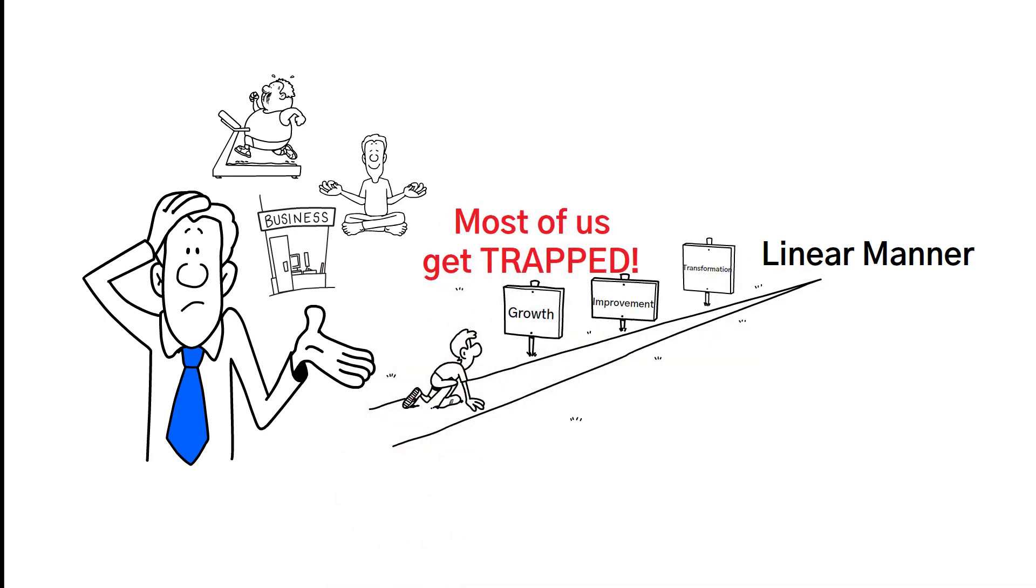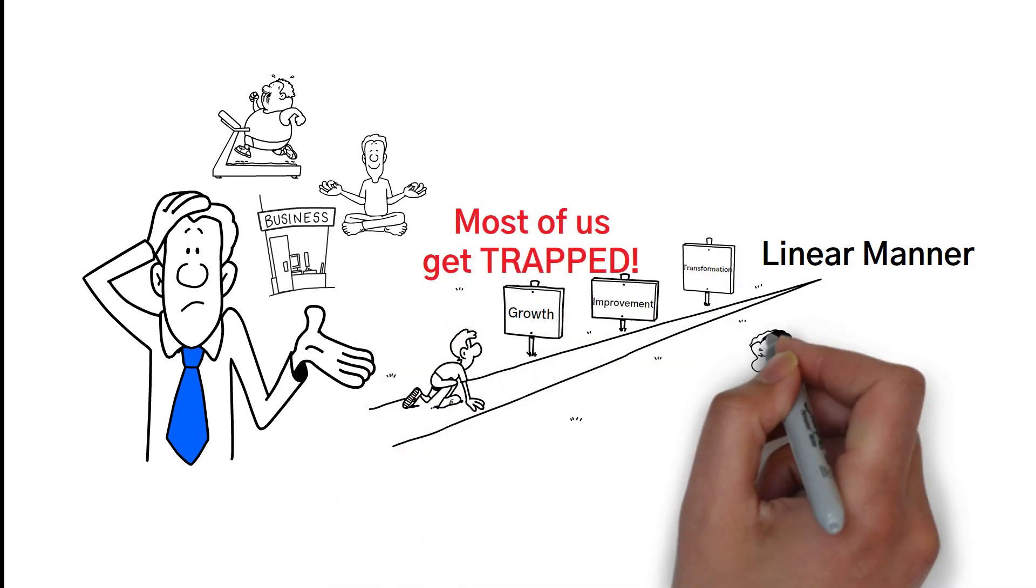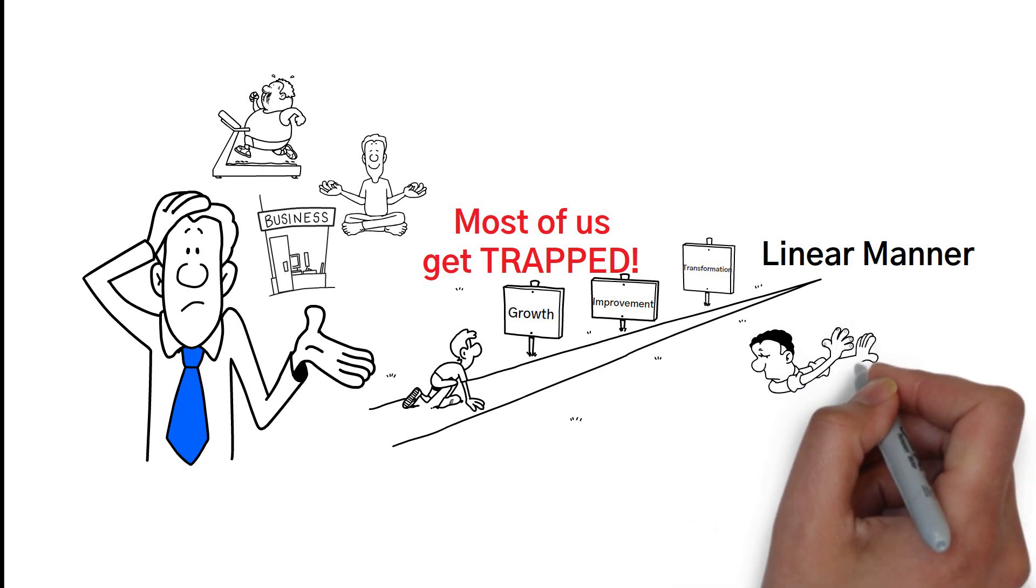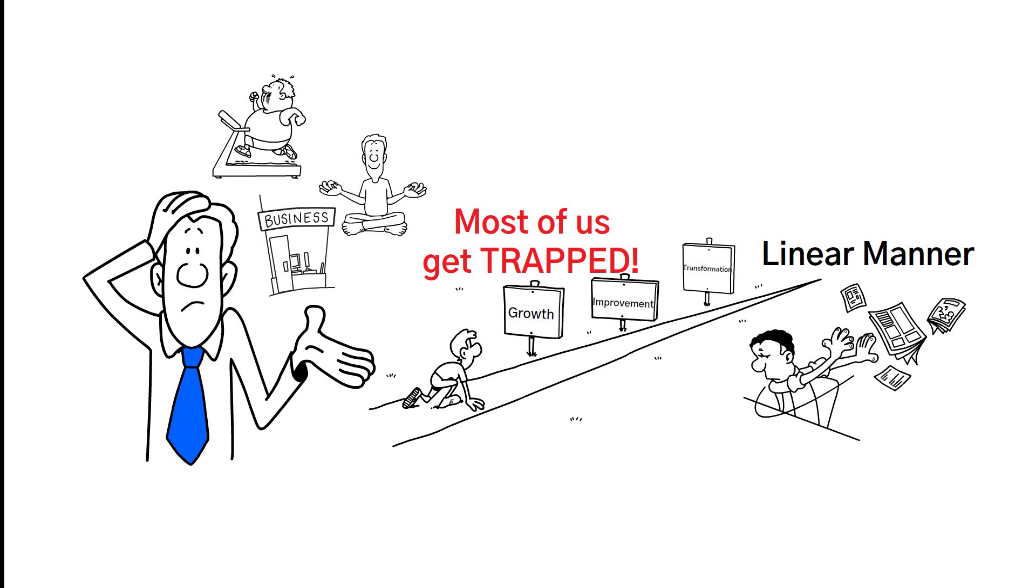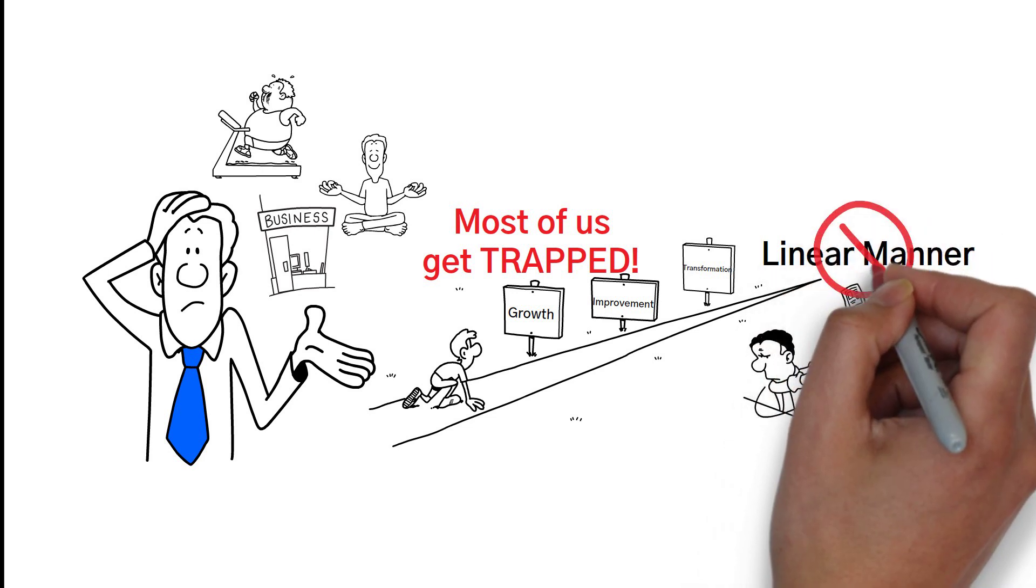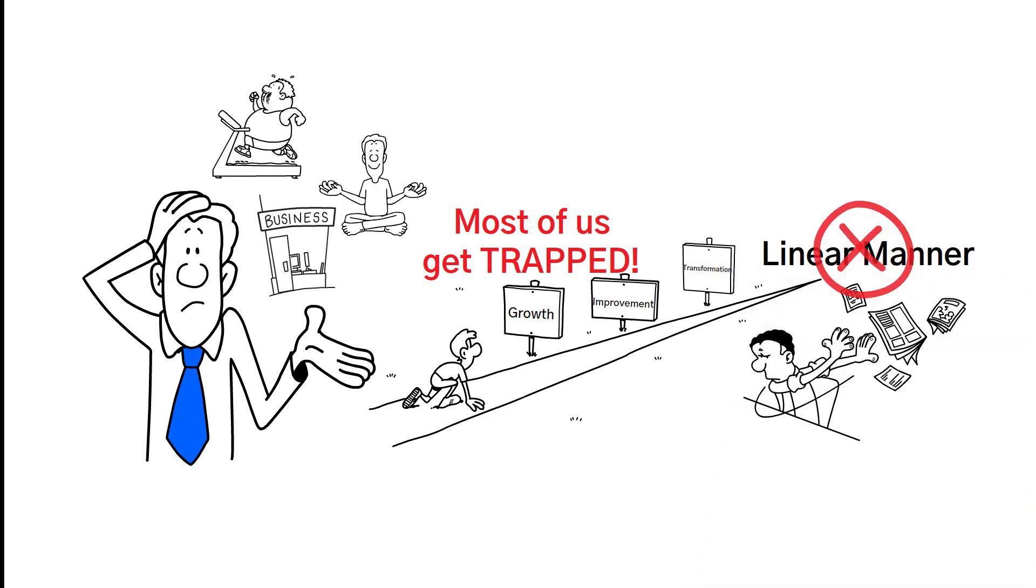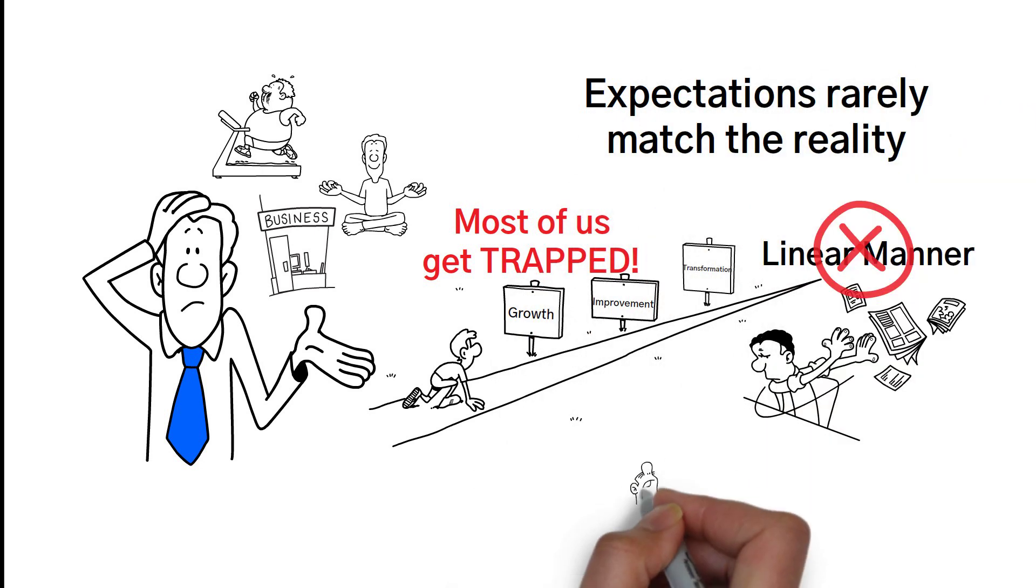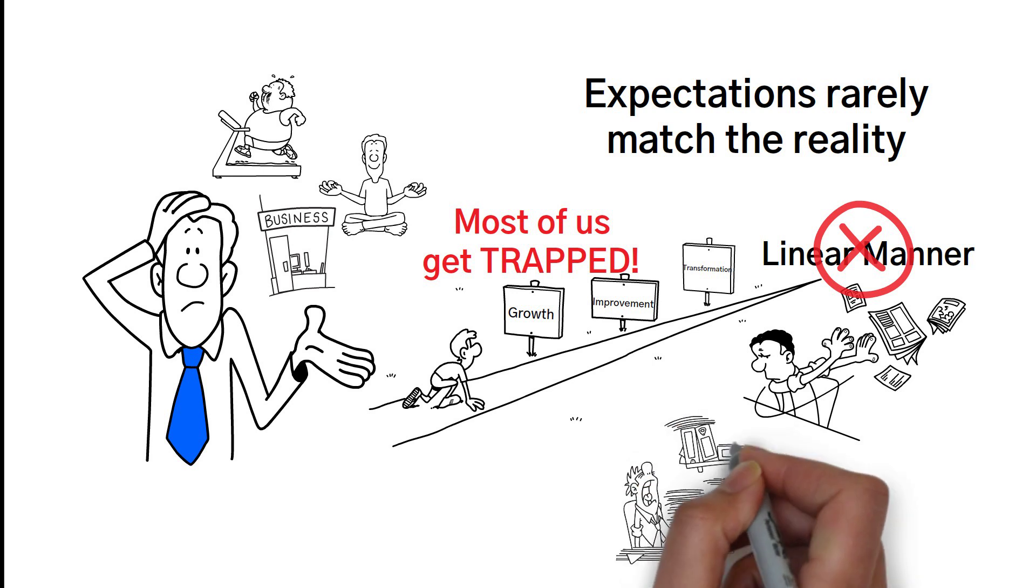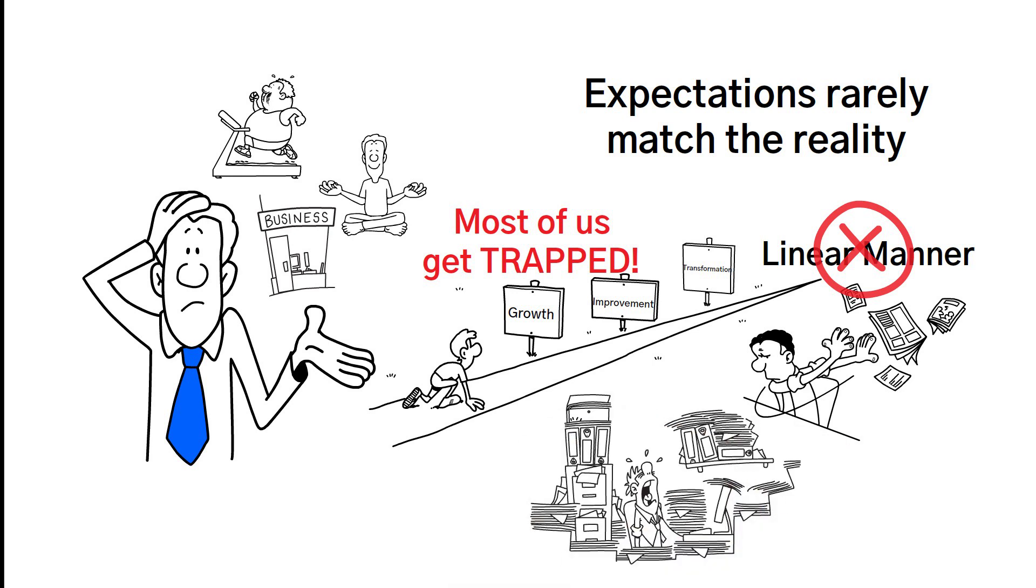Now this is where most of us get trapped. Or worse, with no visible outcome in sight we often feel our efforts are just going to waste and so we quit. But the truth is the results don't actually grow in a linear manner. And that is why our expectations rarely match the reality. And any attempt to change our behavior becomes more and more challenging over time.